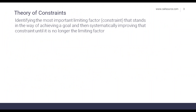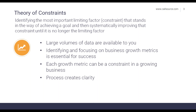The theory of constraints breaks down into identifying the most important limiting factor — or the constraint point — that stands in the way of achieving a goal, and then systematically improving that constraint until it's no longer a limiting factor. This can be summed up by a quote by Goldratt: 'The capacity of your business is equal to the capacity of its bottlenecks.'